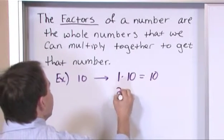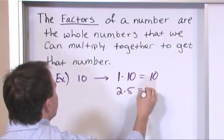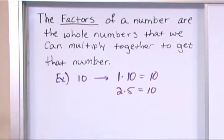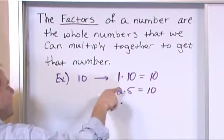And we can also say that 2 times 5 is equal to 10. So these are all whole numbers that can be multiplied together. 1 times 10, 2 times 5.